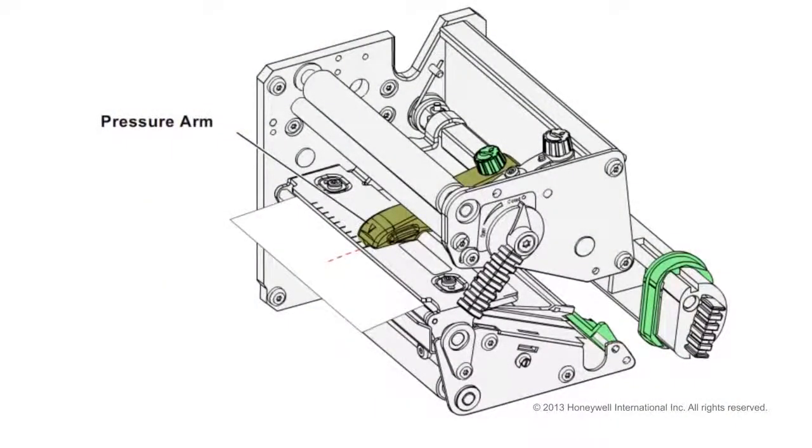The pressure arm applies downward force to the printhead so that it contacts the media evenly across the width of the printhead. The pressure arm should always be adjusted to be located at the center of the installed media.